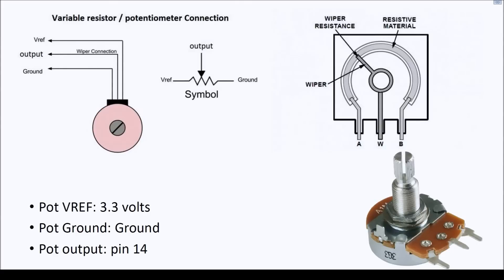We're going to start with a simple test of the ADC using a potentiometer. A potentiometer is just a fancy word for a variable resistor — the kind of thing you find in gain knobs on a stereo, a volume control, or in a joystick for a video game controller to read the position on each axis.